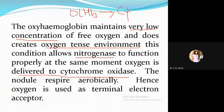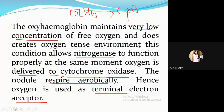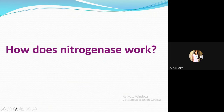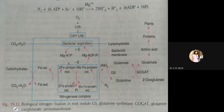O-LHb goes to cytochrome oxidase, the nodule respires aerobically, and oxygen is used as the terminal electron acceptor. Now that we have created the proper environment — removing oxygen with the help of leghemoglobin — nitrogenase can now work properly to fix atmospheric nitrogen.